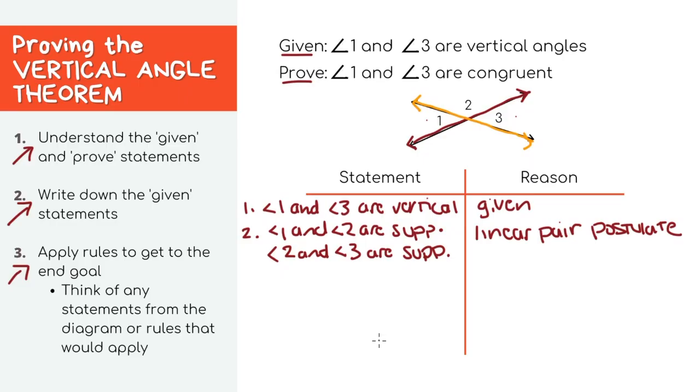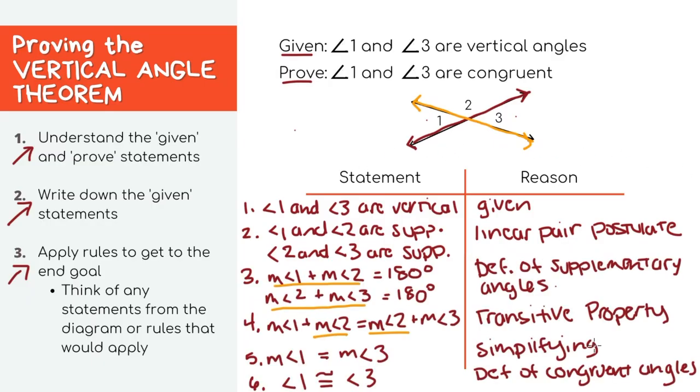Now this problem should look really familiar because it's actually the same problem we just did before this. We can pretty much copy over the same proof which gets us that angle one and angle three are congruent. I just mainly wanted to show that it can be intimidating if you're asked to prove a postulate or a theorem but it's not too bad if you break it down like a normal problem.